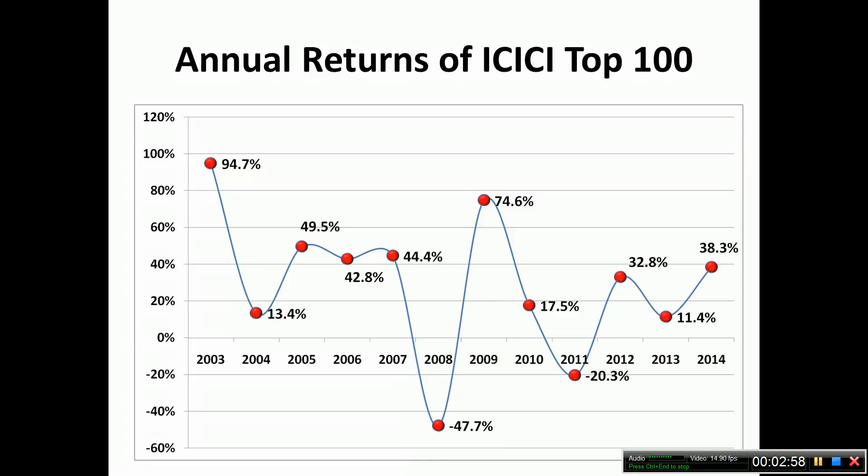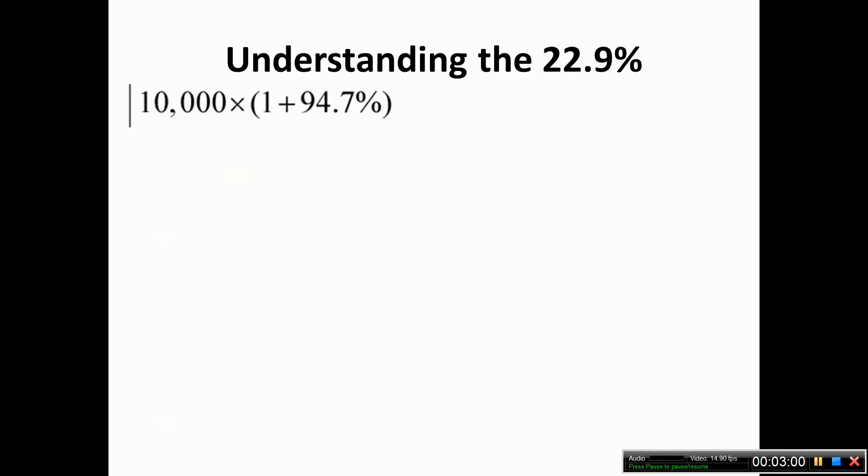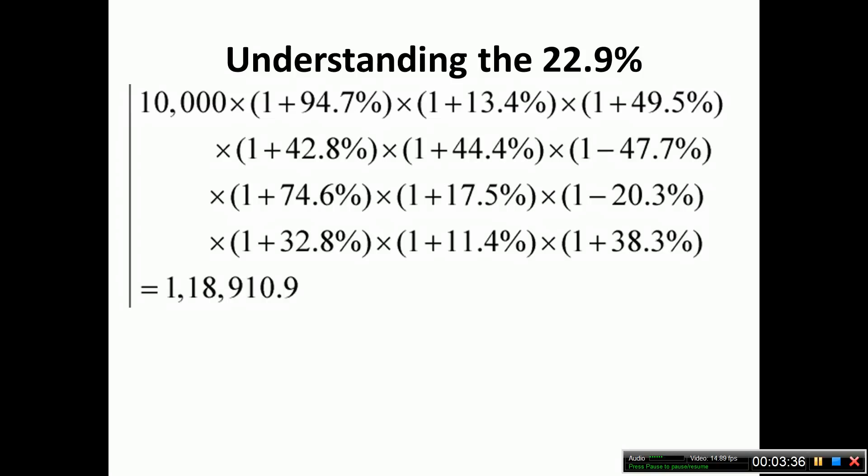Now there's a way in which you can put them all together. So 10,000 at the end of one year would have increased by 94.7%. Now after a couple of years you can see that the investment would have changed by that much: 10,000 × (1 + 94.7%) × (1 + 13.4%) × (1 + 49.5%). Those are the annual returns in the second and third years. So now we continue doing that for the next nine years to get the complete journey.